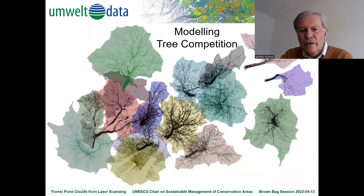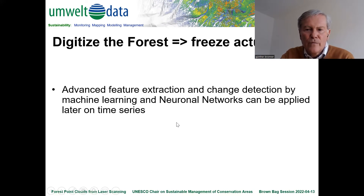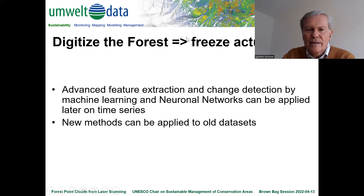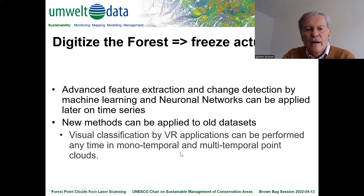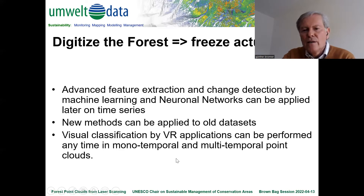You can also model tree competition, using areas derived from single trees. The key concept is this: when you digitize the forest with a scanner, you freeze the actual state. Feature extraction keeps getting better — neural networks and other methods are improving — but you have already frozen your actual state. Even as methods improve, you can apply them to the already-frozen digital twins. You could even walk through the forest in virtual reality later on.